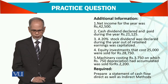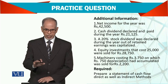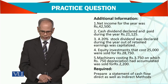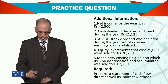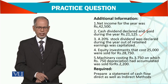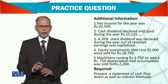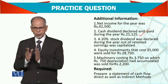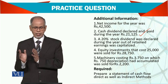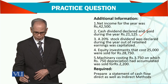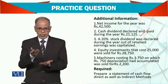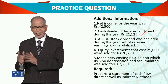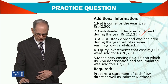Now, additional information is given. Net income for the year is given as per the question. Cash dividend declared and paid during the year is also given. Then 20% stock dividend — this is basically a bonus. So it's not a cash dividend, it's a bonus. Again, there is an increase in the capital, but it is a transfer from retained earnings, and no money is coming in or going out.